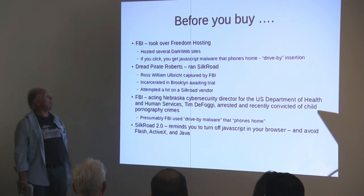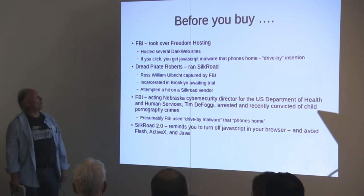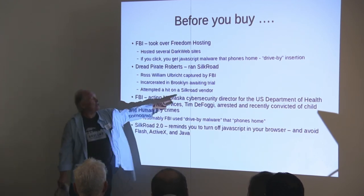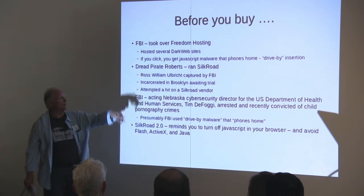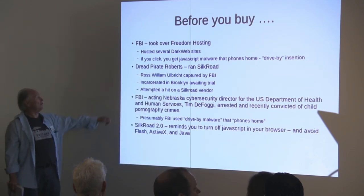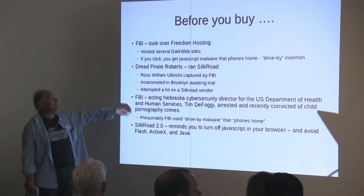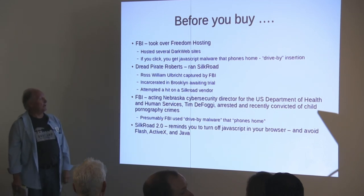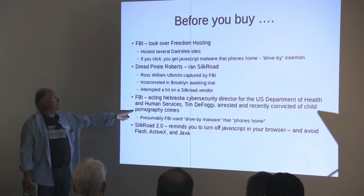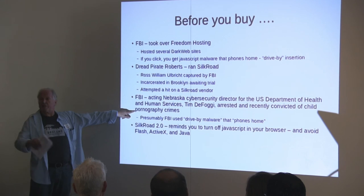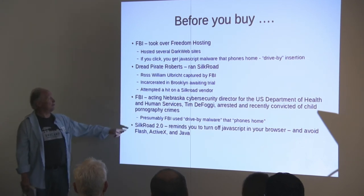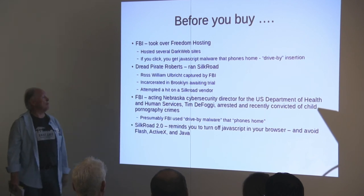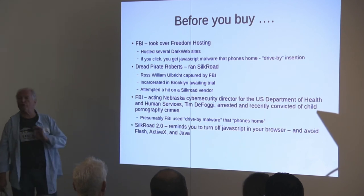The Dread Pirate Roberts ran Silk Road — his real name is Ross William Ulbricht. He was captured by the FBI and is incarcerated in Brooklyn awaiting trial. He attempted a hit on a Silk Road vendor, and that's one of the things he's being prosecuted for: attempted murder. The FBI also arrested the acting Nebraska Cyber Security Director for the US Department of Health and Human Services, Tim DeFalge, who was recently convicted of child pornography. He was using Tor — presumably the FBI used drive-by malware. Silk Road 2.0 reminds you to turn off JavaScript.